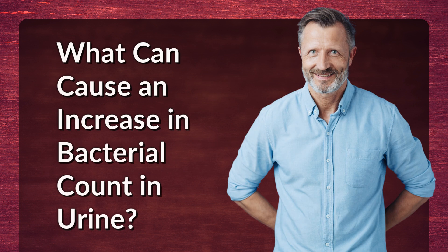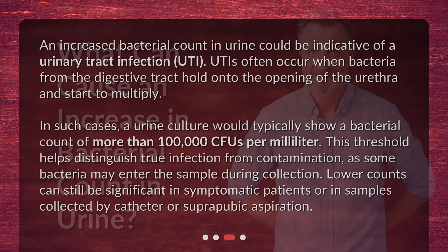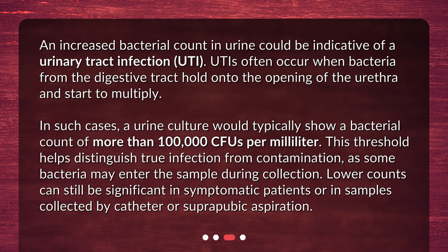What can cause an increase in bacterial count in urine? An increased bacterial count in urine could be indicative of a urinary tract infection, or UTI. UTIs often occur when bacteria from the digestive tract hold onto the opening of the urethra and start to multiply. In such cases, a urine culture would typically show a bacterial count of more than 100,000 CFUs per milliliter. This threshold helps distinguish true infection from contamination, as some bacteria may enter the sample during collection. Lower counts can still be significant in symptomatic patients or in samples collected by catheter or suprapubic aspiration.